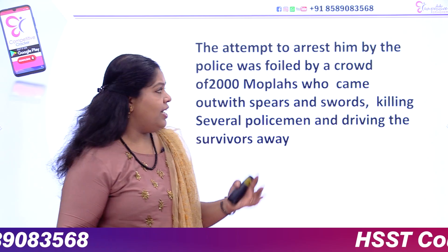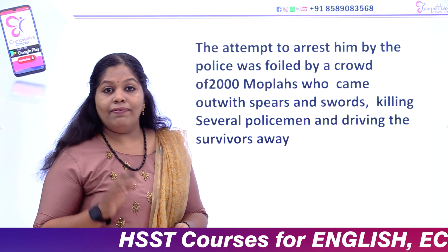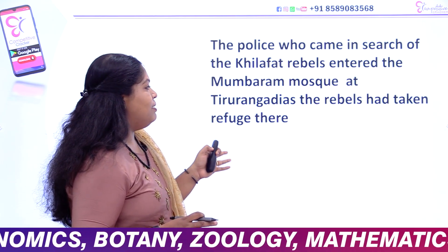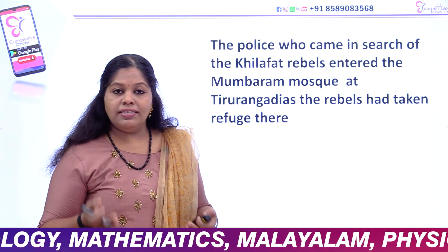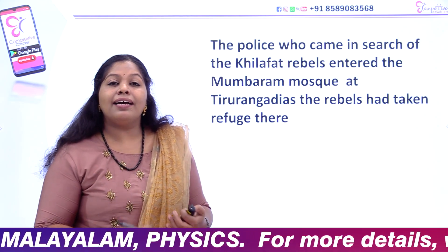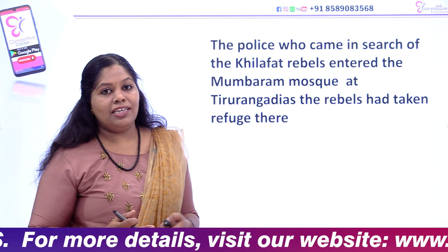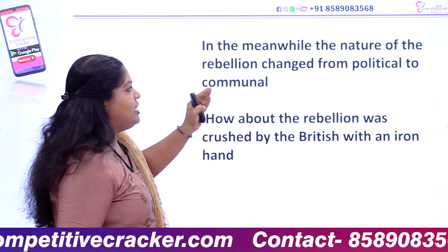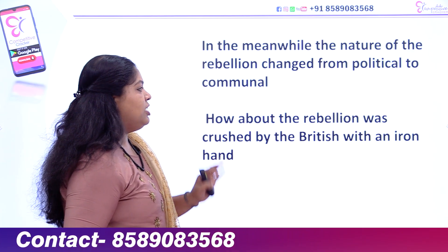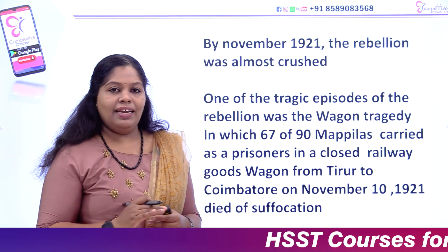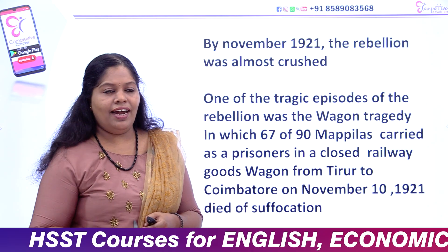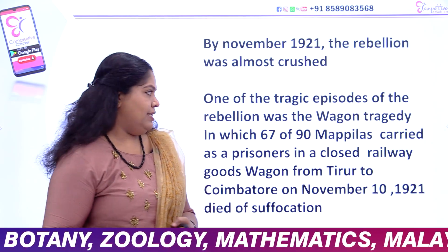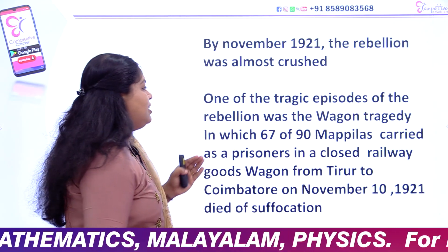The attempt to arrest him by the police was foiled by a crowd of 2,000 who came with pikes and swords, killing several policemen and driving the survivors away. The police who came in search of Khilafat rebels entered the Mambaram Mosque. The rebels had taken refuge there. As a result, the nature of the rebellion changed from political to communal. The rebellion was crushed by the British with an iron hand. By November 1921, the rebellion was completely crushed.